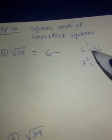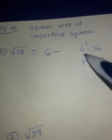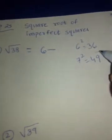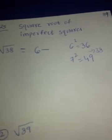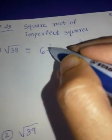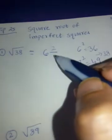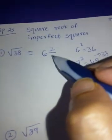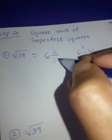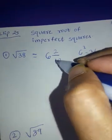Numerator will be difference of 38 and 36. Remember, it's going to be little more than 6 because 38 is more than 36. 38 lies here. Isn't it? So whatever the difference between them, write it here. And in the denominator, write double of 6. That is 12. And that is your answer.